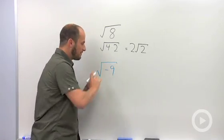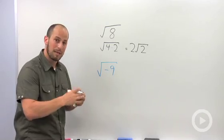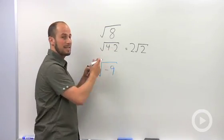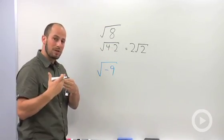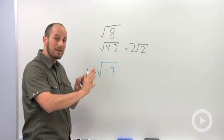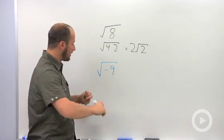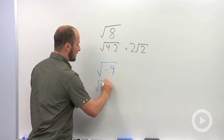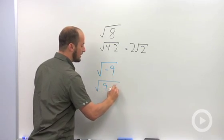We've been saying this isn't real, which is true. But just like we did up here, we can split this up into a real component, which is the 9 part we know, and the negative 1 part, which is the part that sort of throws us off. So what we're going to say is this is the same thing as the square root of 9 times negative 1.